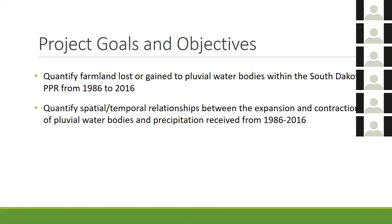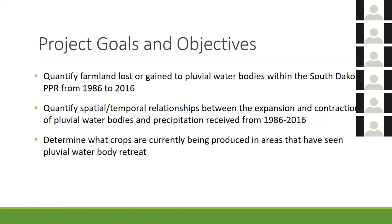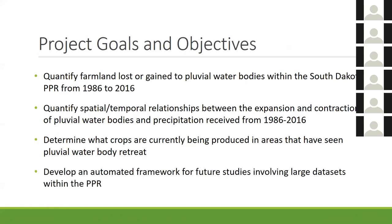The second goal is to quantify the spatial and temporal relationships between the expansion and contraction of pluvial water bodies and precipitation received from 1986 to 2016 — specifically testing for a statistically significant relationship between precipitation and water body land area. Third, to determine what crops are currently being produced in areas where water bodies have disappeared or retreated. And fourth, to develop an automated framework for future studies involving these large datasets, since I need 30 years worth of imagery.